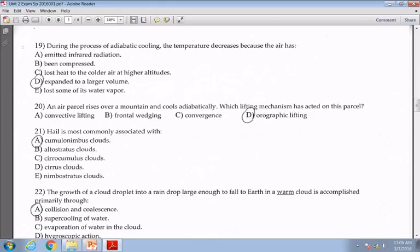Question nineteen, during the process of adiabatic cooling, the temperature gets cooler because D, it's expanding. Question twenty, orographic lifting is when a parcel of air rises up and over a mountain. D is the best answer for twenty. Twenty-one, hail is associated with cumulonimbus clouds, A for twenty-one.